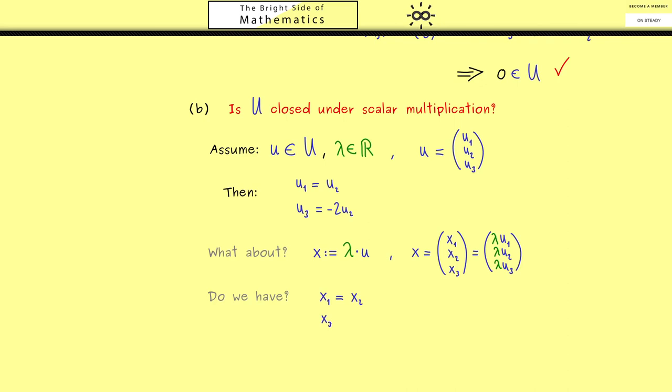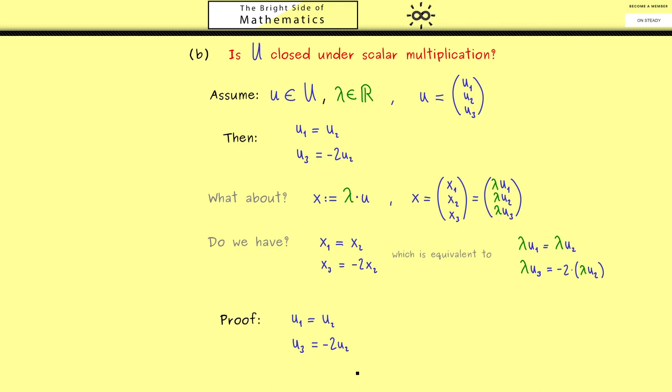Now the overall question is: are the two equations also satisfied for this new vector x? This simply means x₁ is equal to x₂ and x₃ is equal to minus 2x₂. Now of course we already know this is equivalent to a formulation with the components of u and λ. More precisely, this means λu₁ is equal to λu₂, and λu₃ is equal to minus 2 times λu₂. Therefore, to answer this question—to show that we cannot leave U just by scalar multiplication—we have to go from these equations to these ones. This is now something we should try to do.